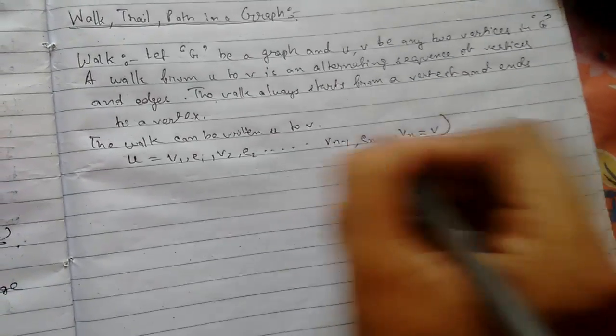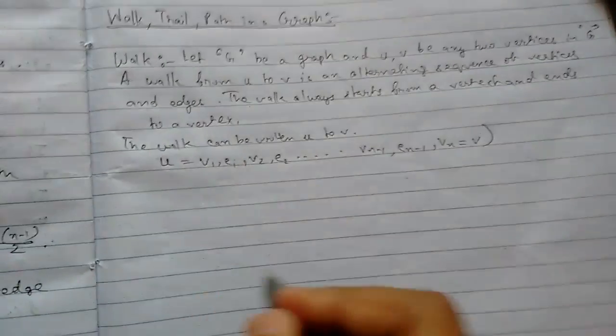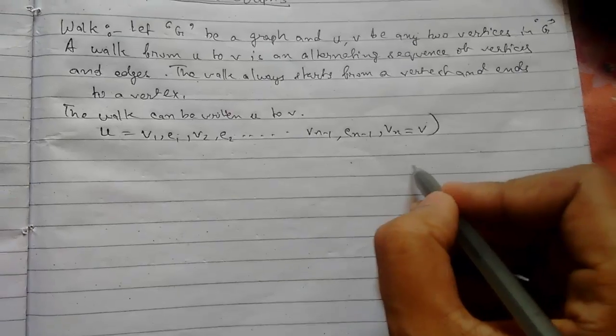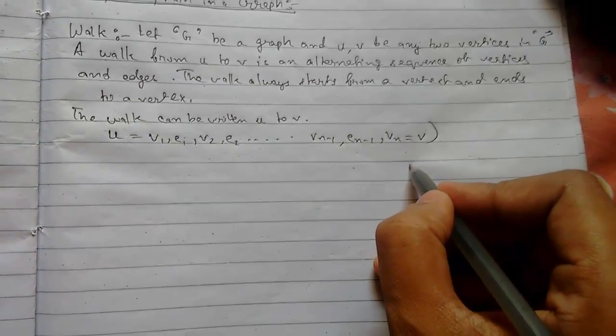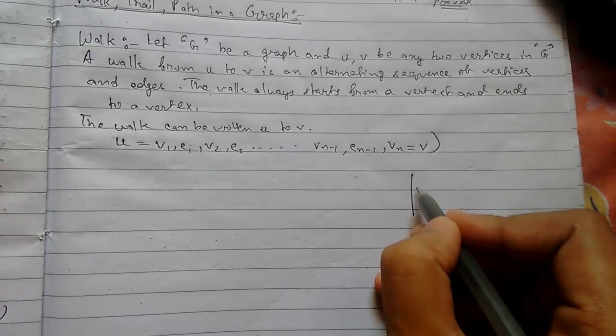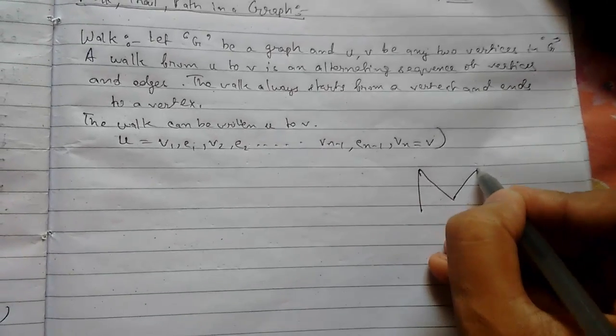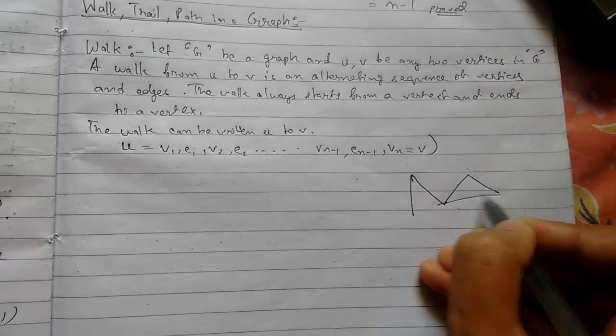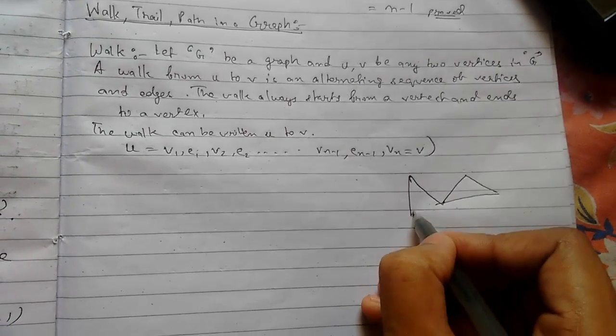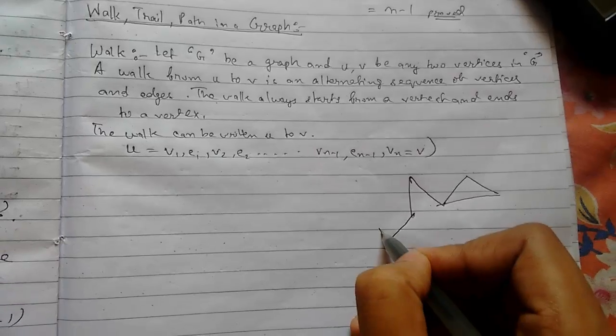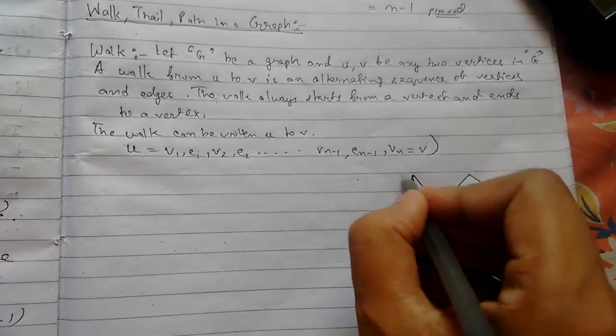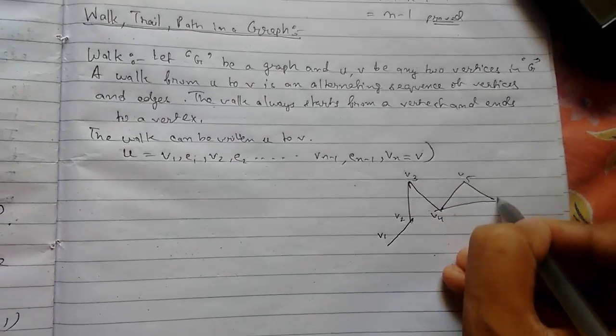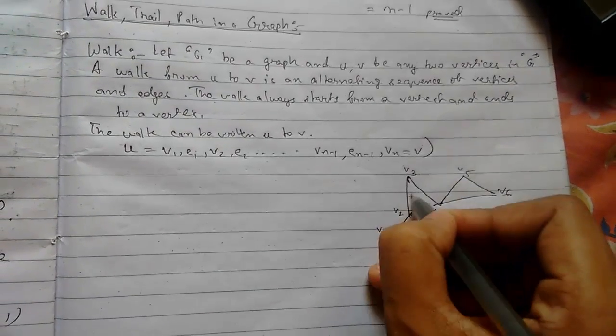Let me draw a graph and then I will explain how it looks. Suppose we have a graph like this: vertices v1, v2, v3, v4, v5, v6 and edges e1, e2, e3, e4, e5, e6.